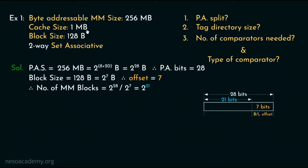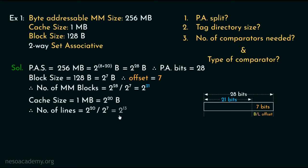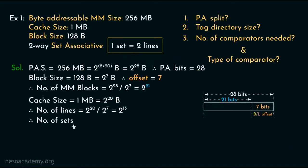The cache size is 1 megabyte, which is 2 to the power 20 bytes. Dividing by the block size of 2 to the power 7 gives us 2 to the power 13 cache lines. Since it's a 2-way set associative cache, every set contains 2 lines. Dividing the number of cache lines by the set size gives us 2 to the power 12 sets, so 12 bits will be used for the set number. We can then find the tag bits: 28 minus (12 plus 7) results in 9 bits.